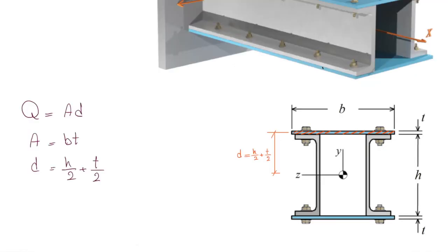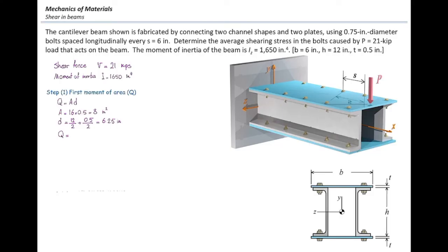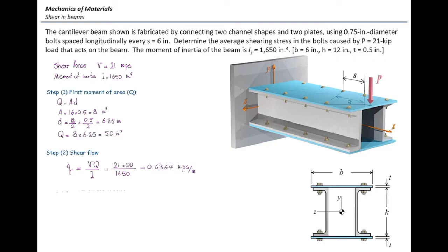D is equal to half the height of the C-channel plus half the thickness of the plate, so H/2 + T/2. Given A and D, we can calculate the first moment of area Q, which comes out to 50 inch cubed. After determining Q, we can find the shear flow, lowercase q, from VQ/I. Plugging in the values, the total force transferred by the bolts per inch of beam is 0.6364 kips per inch.